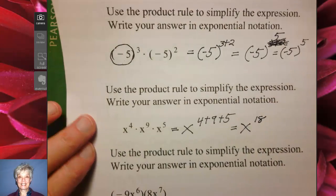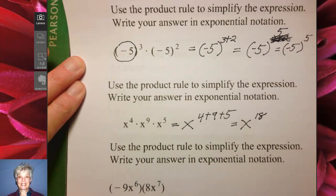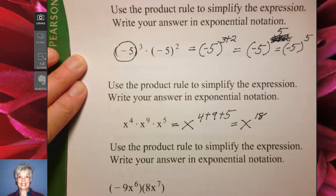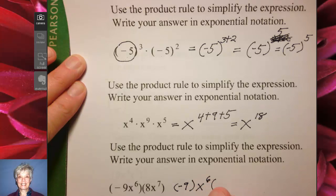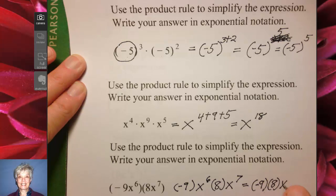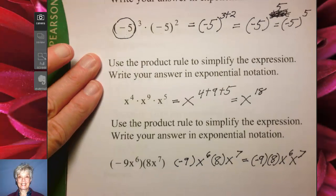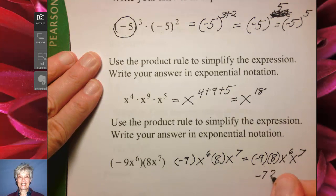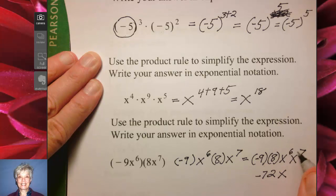Now here we have the same instructions, but this is really going to be a multiplication problem. We're multiplying four things here: negative 9 times x to the 6th, times 8 times x to the 7th. That's going to be negative 9 times 8 times x to the 6th times x to the 7th. Negative 9 times positive 8 is negative 72. x to the 6th times x to the 7th is x to the 6 plus 7, and 6 plus 7 is 13. So our answer is negative 72 times x to the 13th.